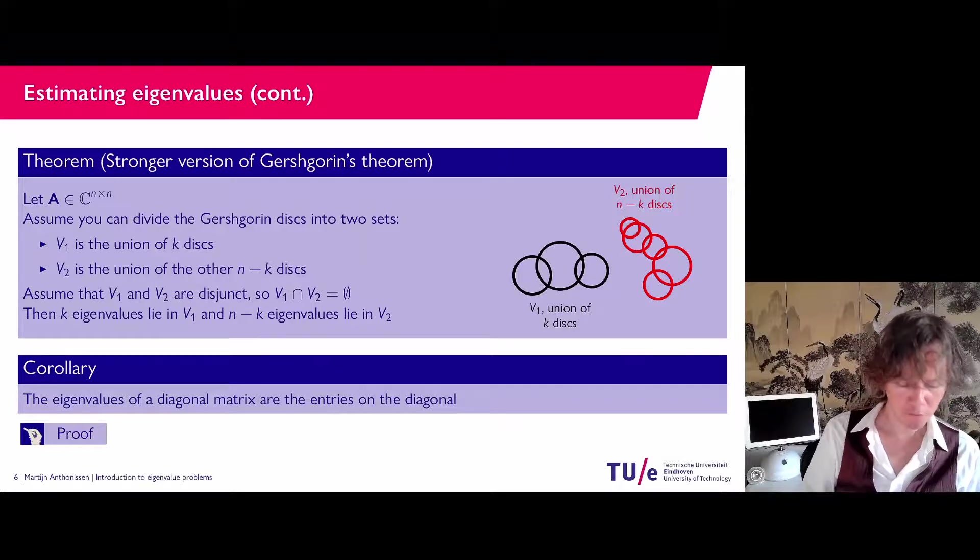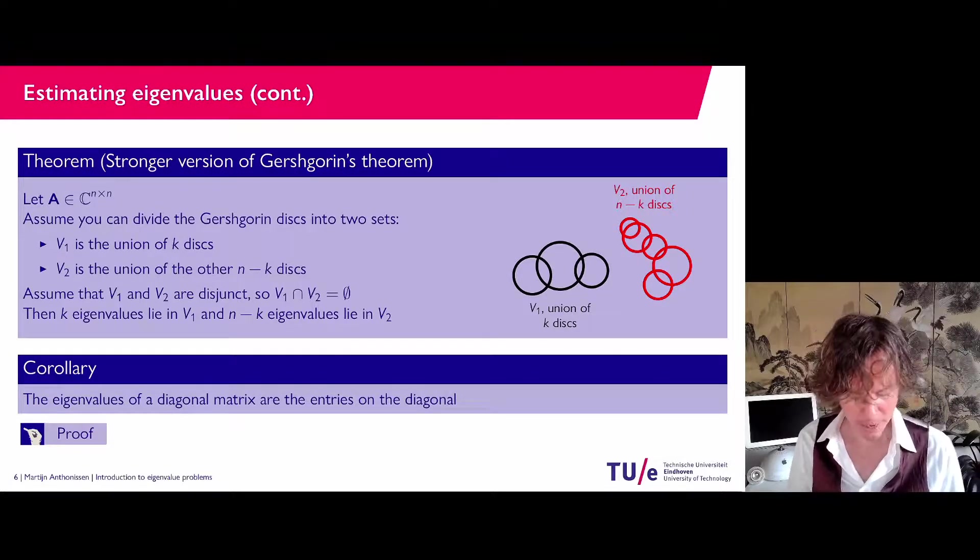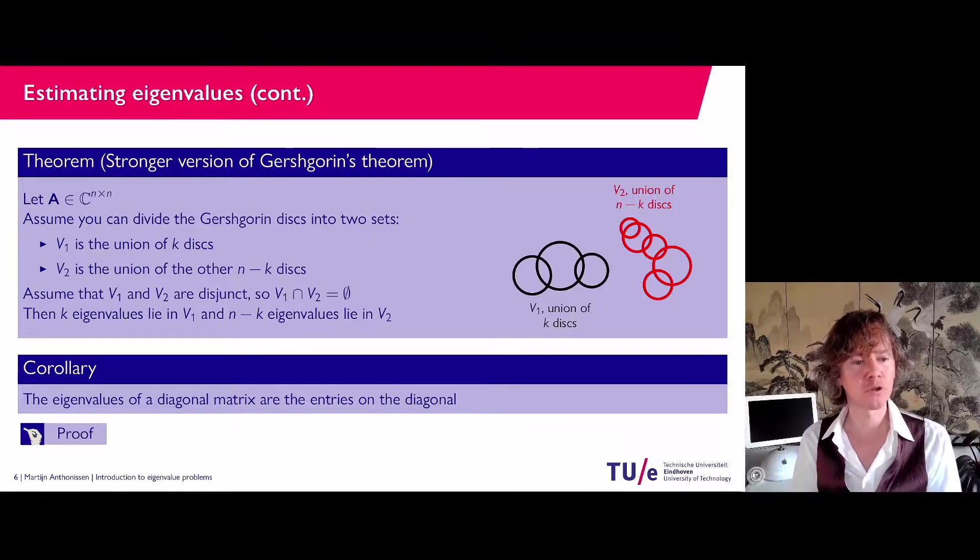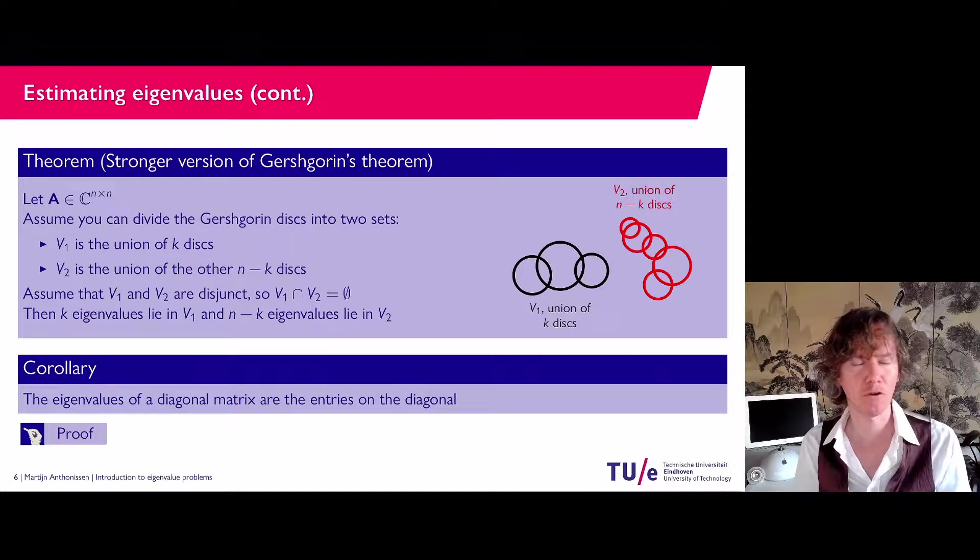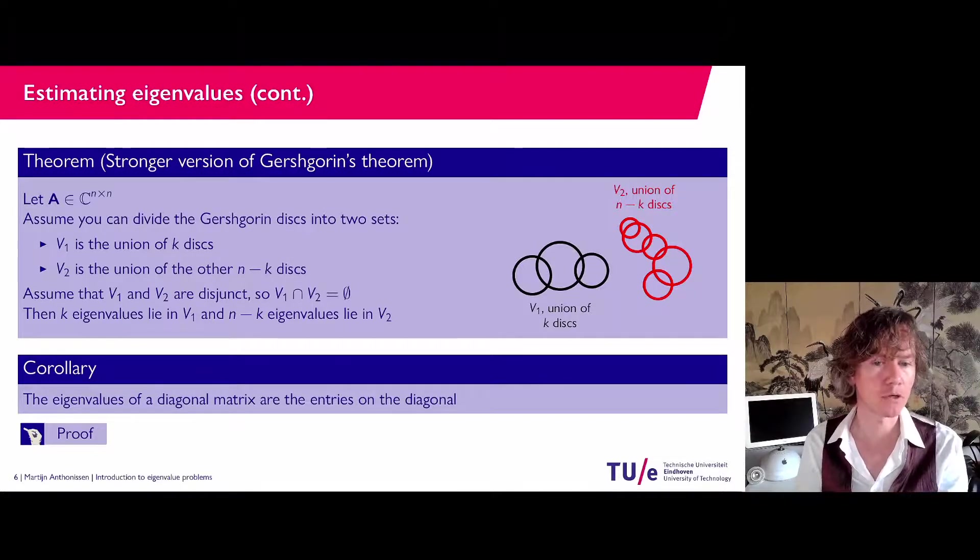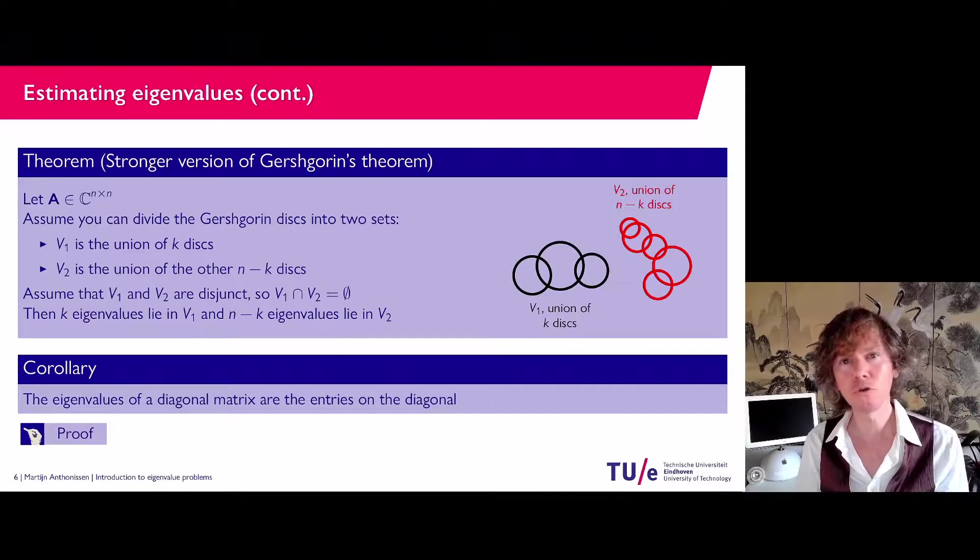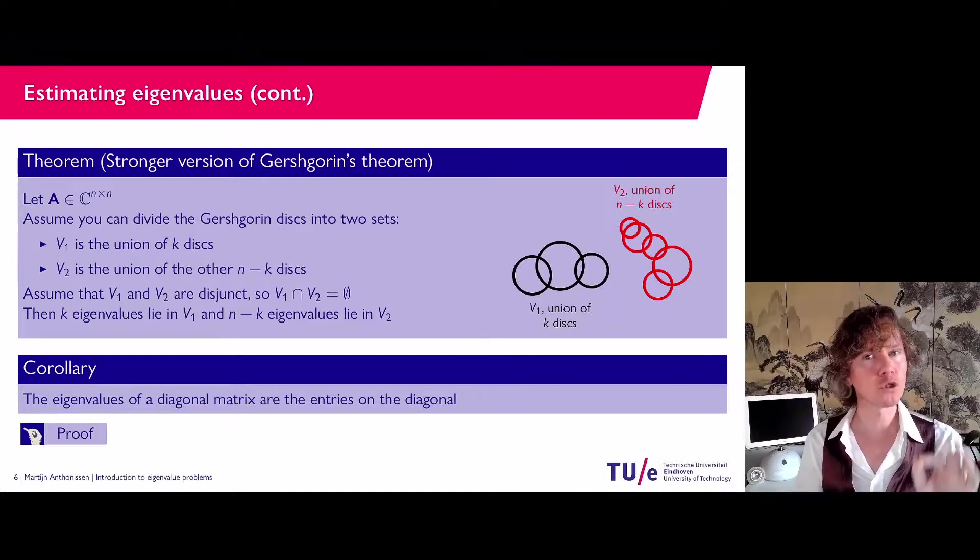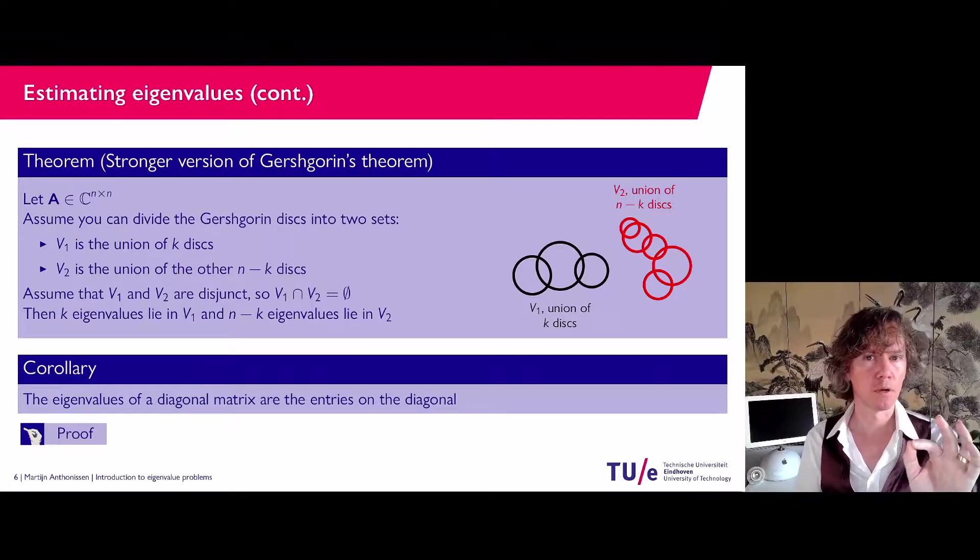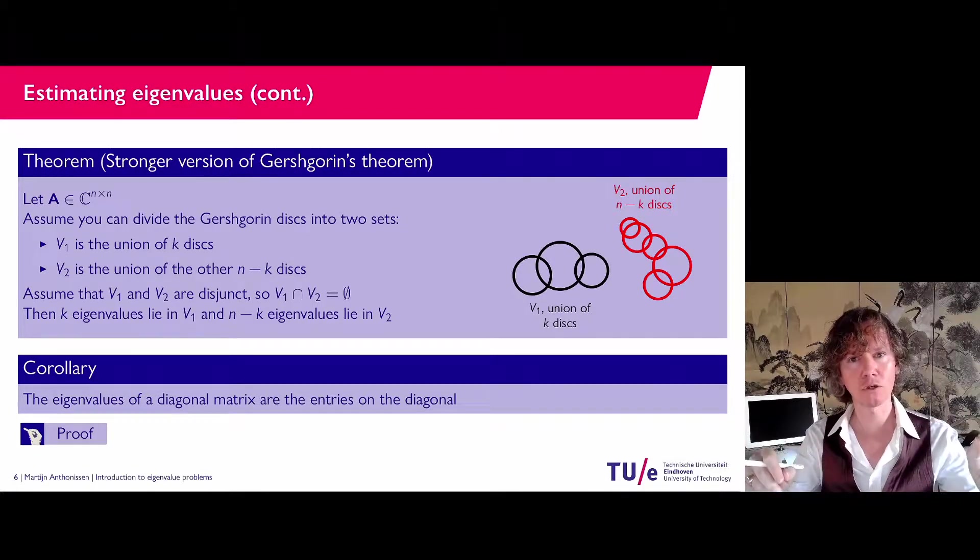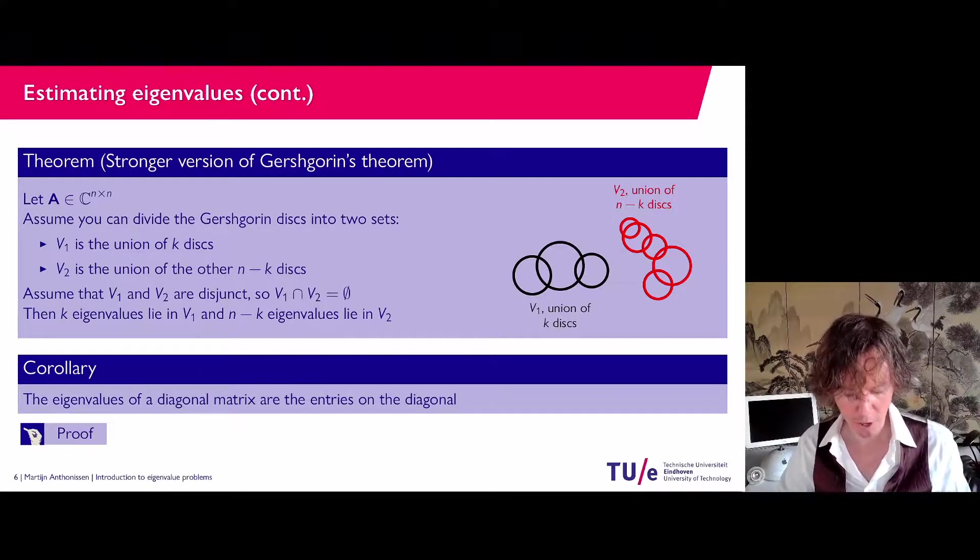And a corollary of this, and you've probably already seen this in the past, is that if you have a diagonal matrix, then the entries on the diagonal are the eigenvalues. And it's very easy to see. You could take the unit vectors e1, e2. They are the eigenvectors here. But you could also use Gershgorin's theorem because the disks, the Gershgorin disks, they are now just one point because they have a radius zero. So the disks have one point. And if they are in different locations, then you know that they're all separate. And if they're separate, they contain precisely one eigenvalue.